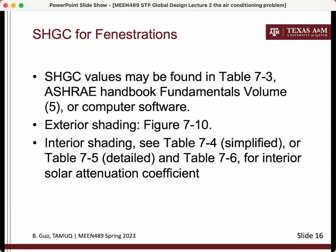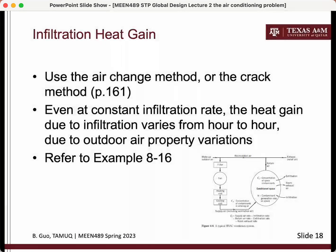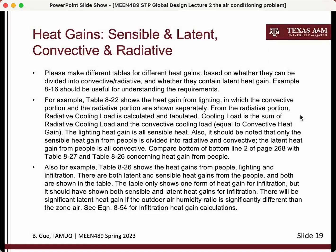Information about obtaining the solar heat gain coefficient (SHGC) for windows and skylights is also covered. Internal heat gains are calculated based on what is present in the indoor environment — occupants, lighting, and other equipment. Infiltration heat gain depends on how leaky the building is and how often doors are opened and closed. Each heat gain must be classified along two dimensions: whether it is sensible or latent, and whether it is convective or radiative.